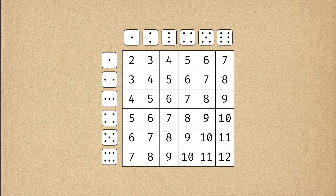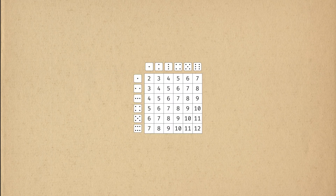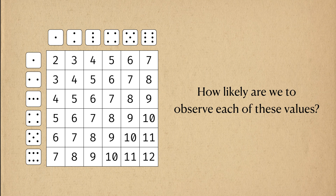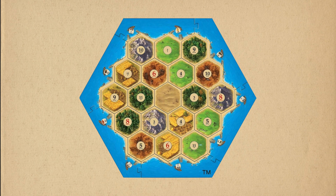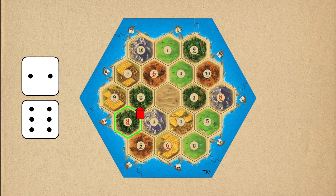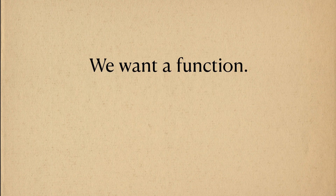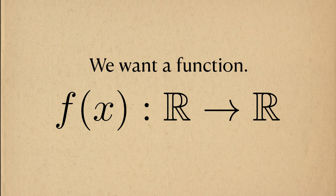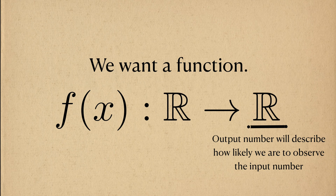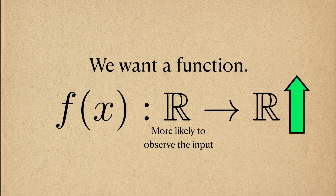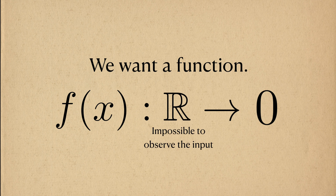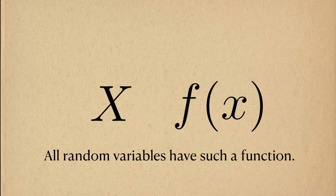We now know that a random variable can take on different values, but just knowing the range of values isn't that useful. We might also be interested in knowing how likely we are to see these different values relative to each other. For example, in Catan, there is a map of hexagons, and most of these hexagons have numbers on them. If you have property on a hexagon, you can collect resources, but only if the sum of the dice matches the number on that hexagon. Therefore, it's in your best interest to build properties on hexagons with numbers that are more likely to come up. Otherwise, you're just sitting there eating Doritos while everyone else is gathering sheep. To be more precise, what we want is a function that takes in a number and outputs another number describing how likely we are to see the input number. Luckily, all random variables have such a function, which we refer to as the probability distribution.